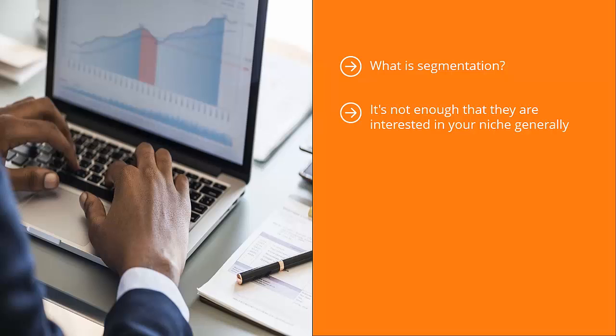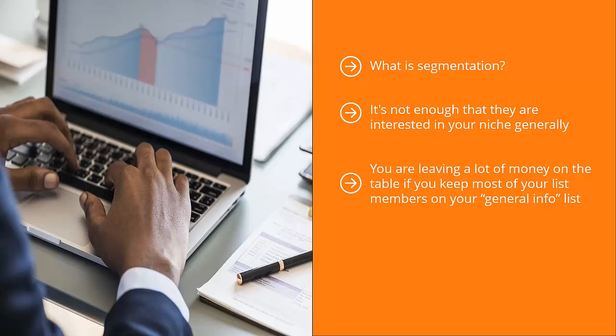You can also segment people based on their purchasing behavior. You are leaving a lot of money on the table if you keep most of your list members on your general info list. You can send update after update to this general list, and the majority of people are probably not going to buy stuff.